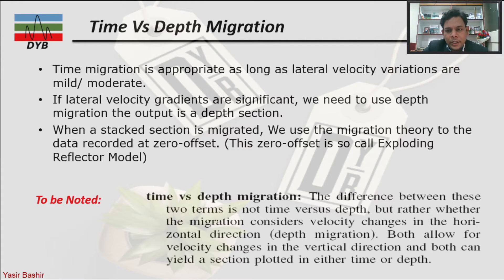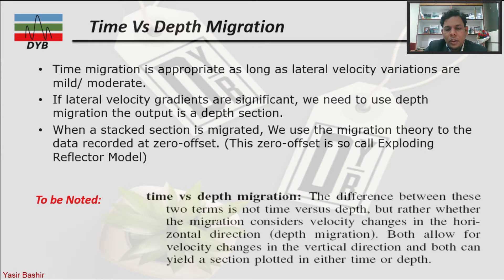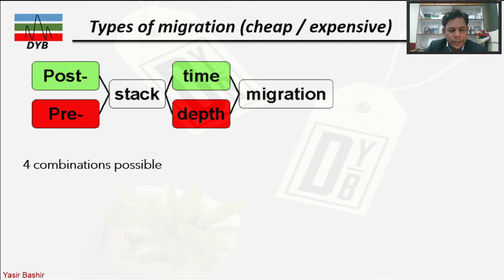The difference between time and depth migration is actually not simply about time versus depth output. It is the difference in how migration considers velocity changes — in the horizontal direction for time, or allowing for velocity changes in both lateral and vertical directions for depth. Both can yield a section plotted in either time or depth, so it is fundamentally about how velocity variation is handled.